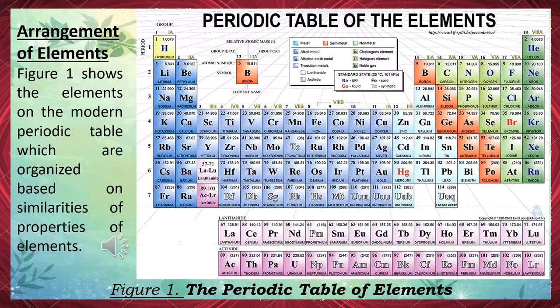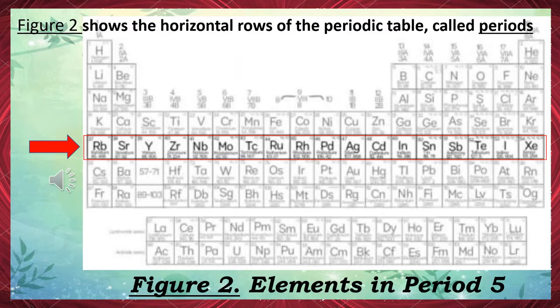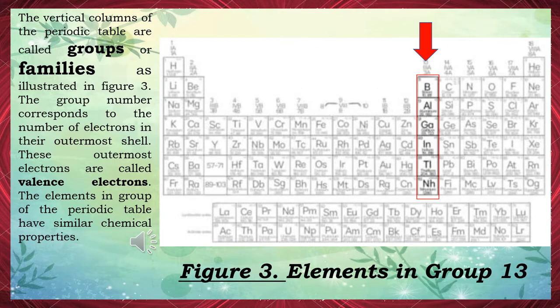Arrangement of Elements. Figure 1 shows the elements on the modern periodic table which are organized based on similarities of properties of elements. Figure 2 shows the horizontal rows of the periodic table, called periods. The vertical columns of the periodic table are called groups or families, as illustrated in Figure 3. The group number corresponds to the number of electrons in their outermost shell — these outermost electrons are called valence electrons. Elements in a group have similar chemical properties.